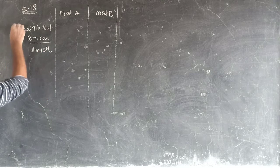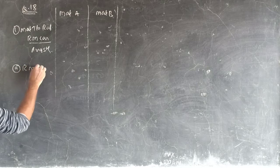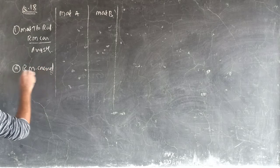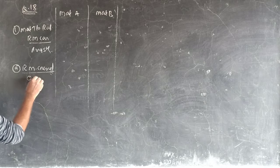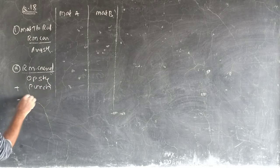Now we will have to calculate the raw material consumption. Raw material consumption: opening stock plus purchase minus closing stock.